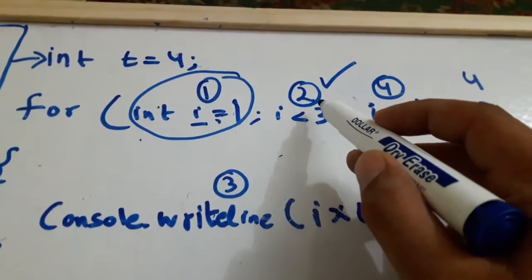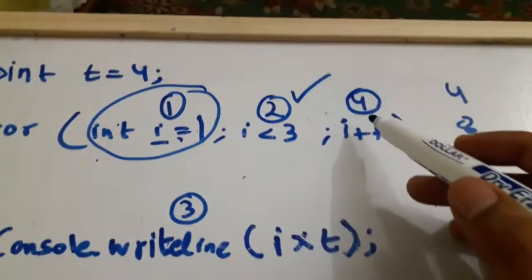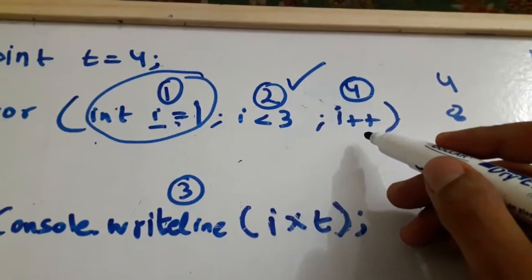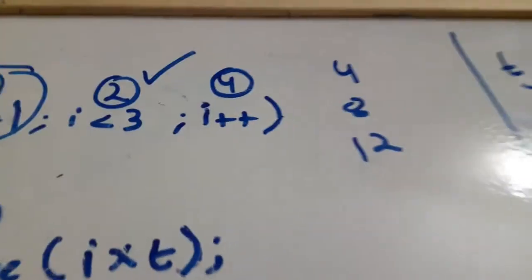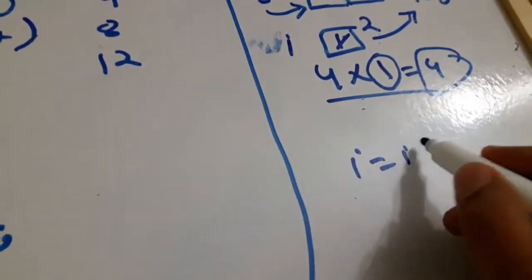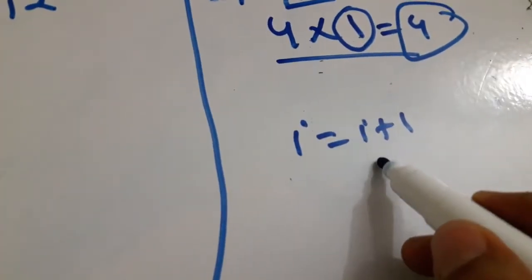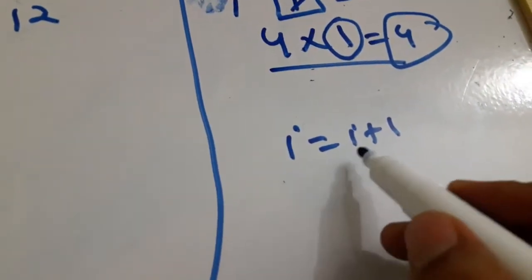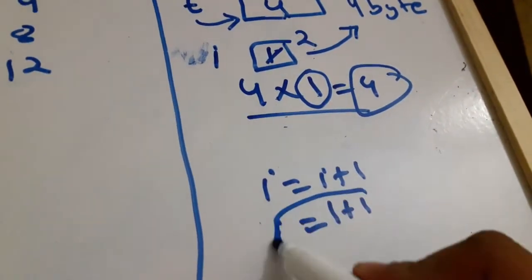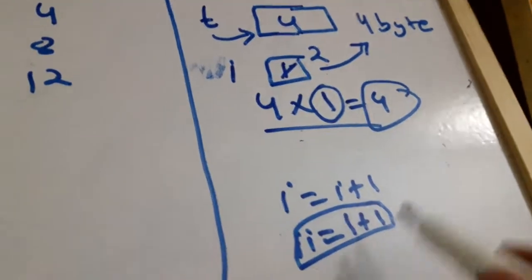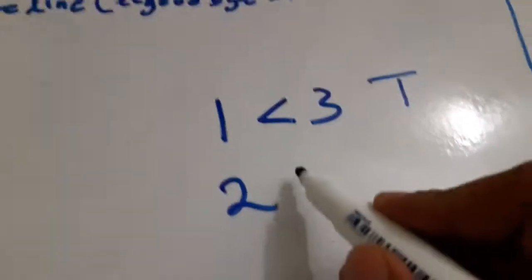After the output is printed, line five closes the block and the program jumps to point four — the increment. So the sequence is: one (init), two (condition), three (body), four (increment). At point four, i++ increases i by one. i++ is equivalent to i equals i plus one. The right side executes first: i was one, plus one makes two, so i is now updated to two in memory.